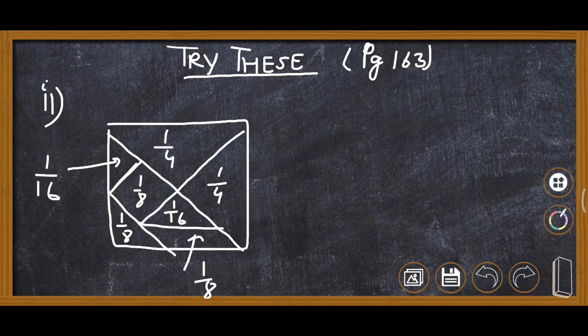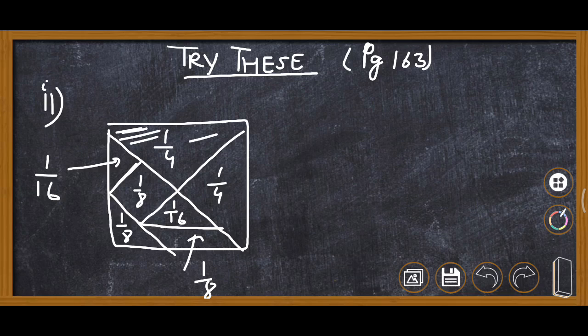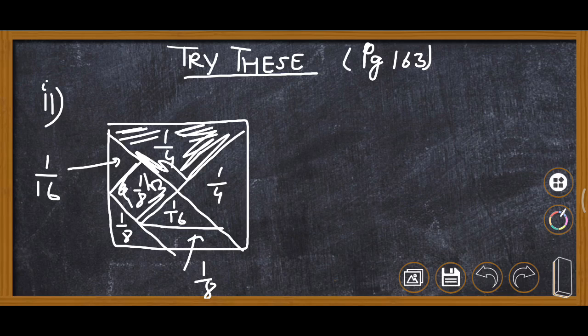Now here you can see the shaded parts are like this: this part is 1 upon 4, this is 1 upon 8, this part is also 1 upon 8, and this part is also shaded.